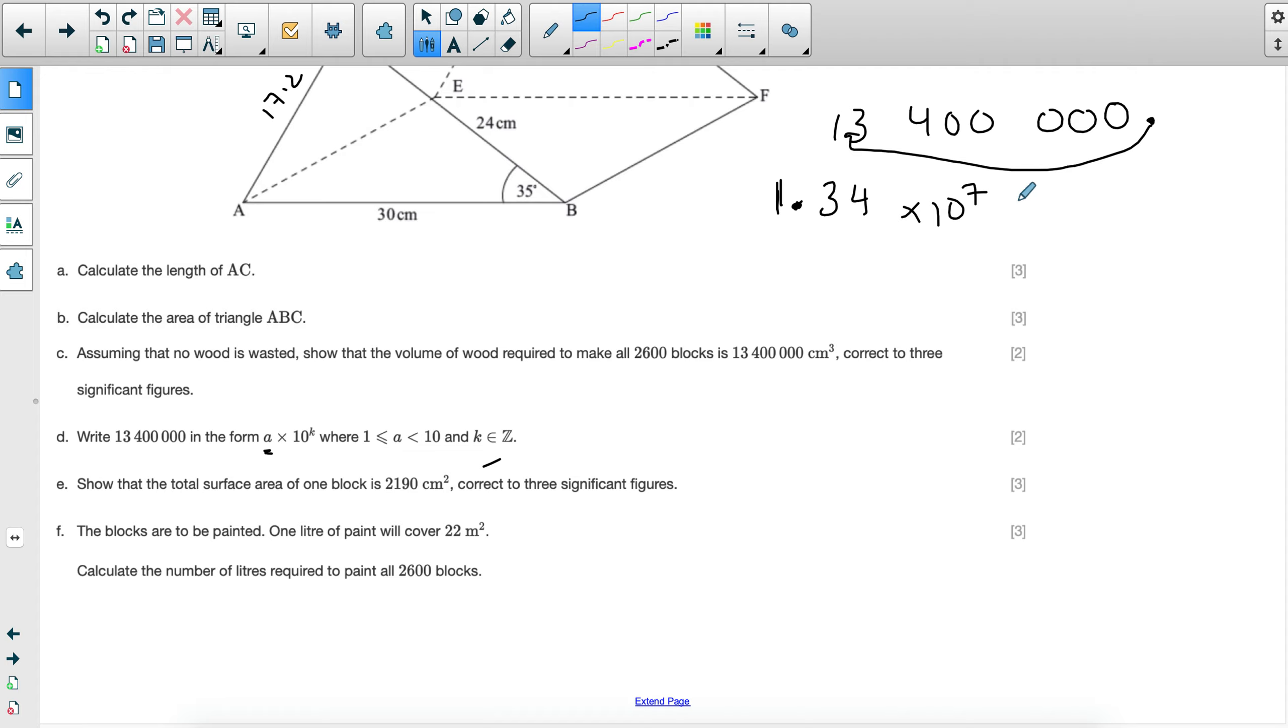You get one mark for writing 1.34 and one mark for having 10 to the power of the correct power. You get no marks if you wrote 13.4 times 10 to the power of 6, for example, because the first number, this A, has to be between one and 10 and strictly less than 10. So this is standard form. There's a video on standard form if you need more help in this area.